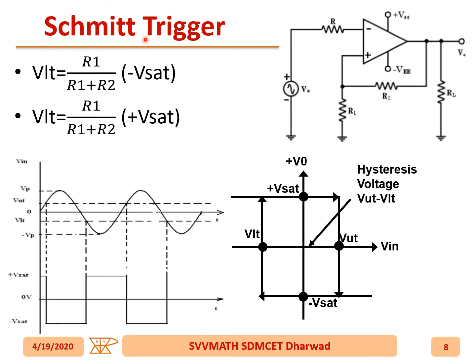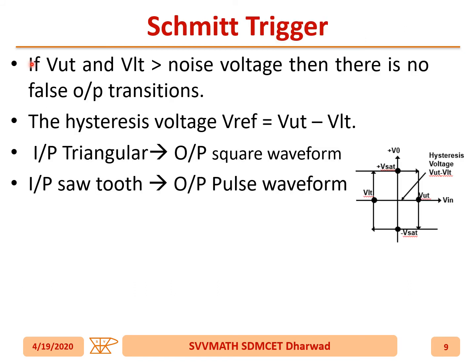The hysteresis diagram shows when the output will be plus V_sat, when it will go to minus V_sat, and the relationship with V_UT and V_LT. The hysteresis voltage is V_UT minus V_LT. If V_UT minus V_LT is greater than the noise voltage, there is no false output transition.